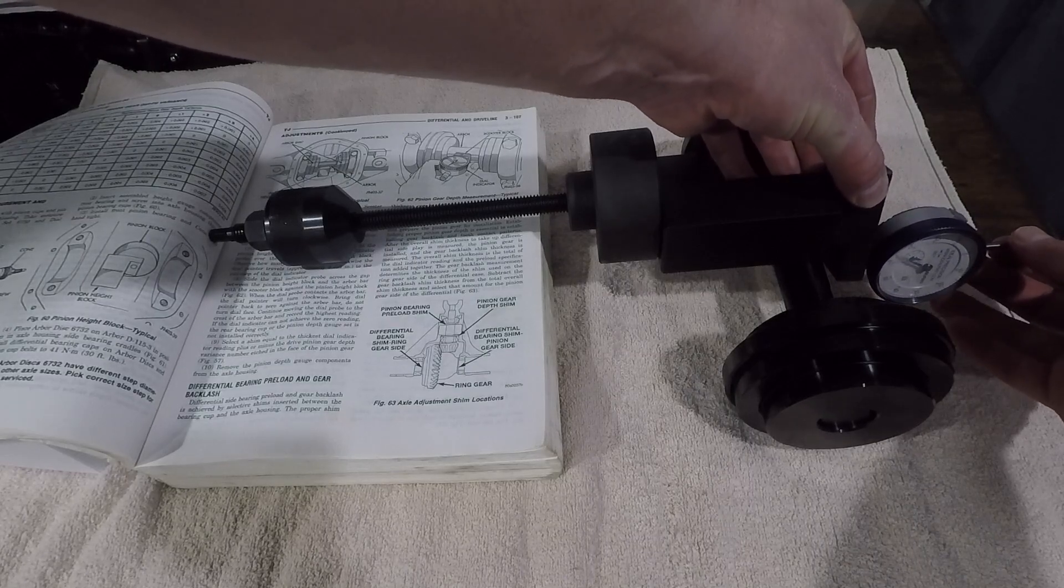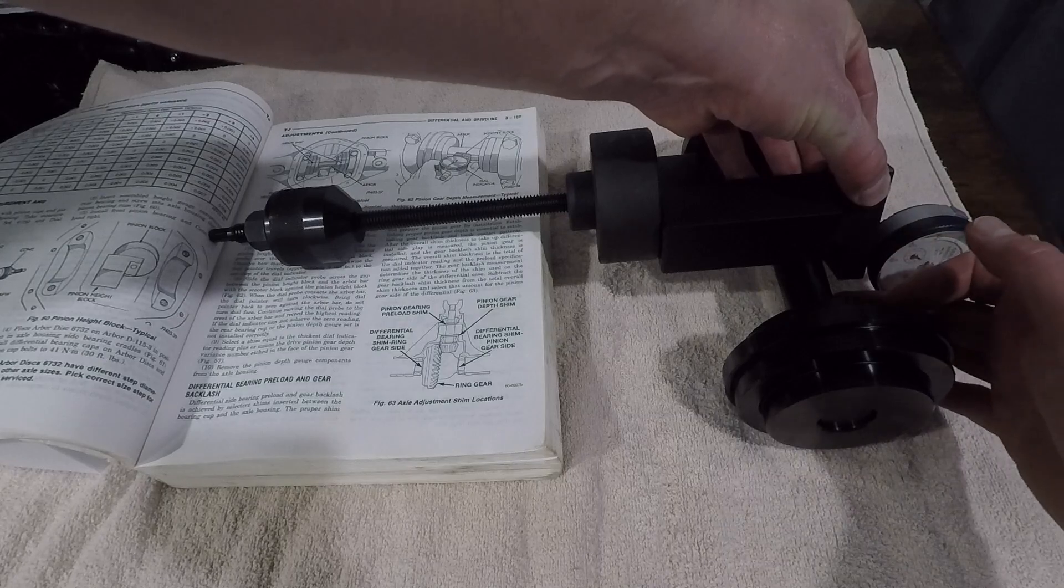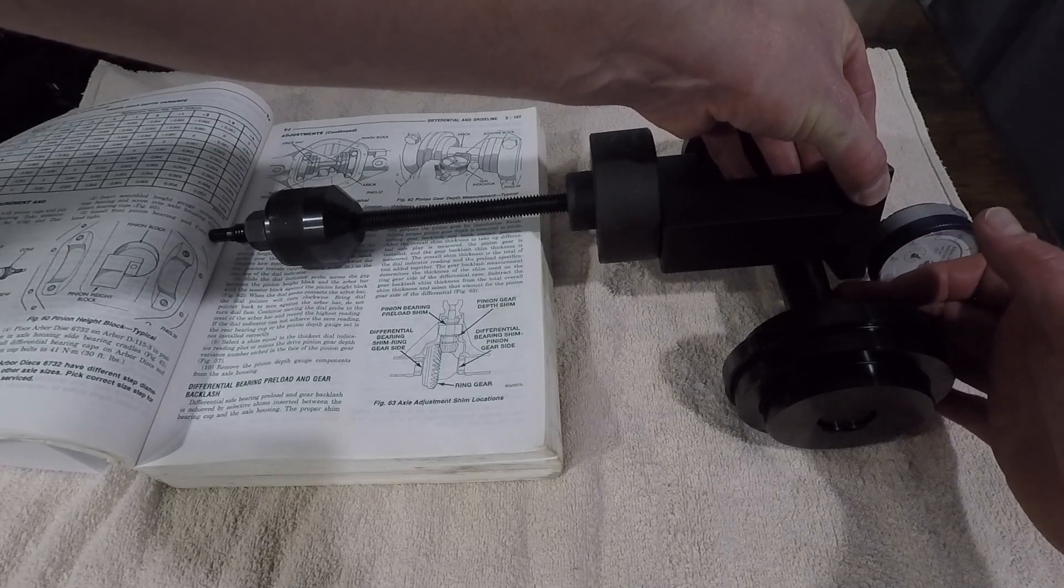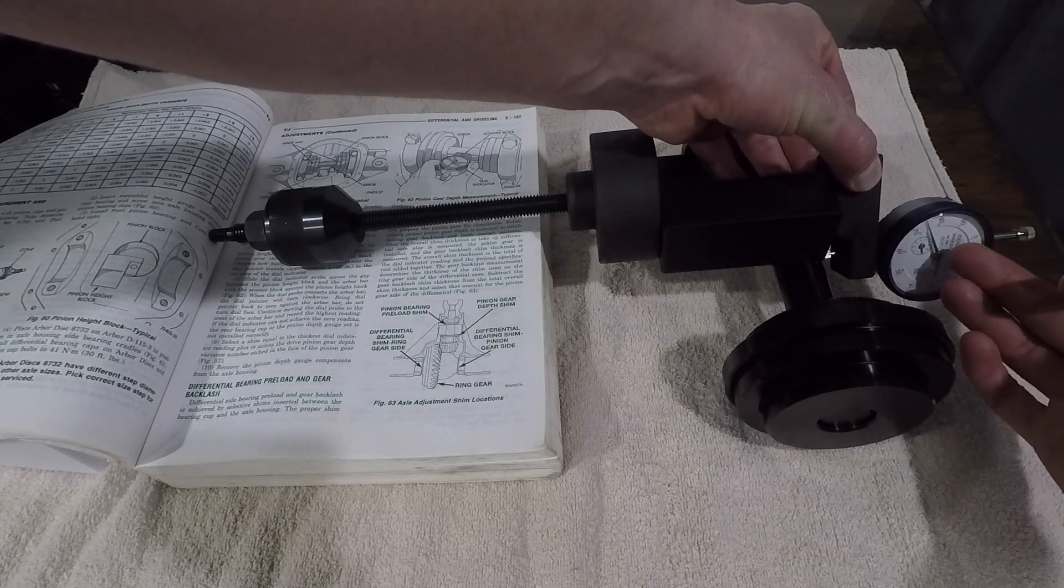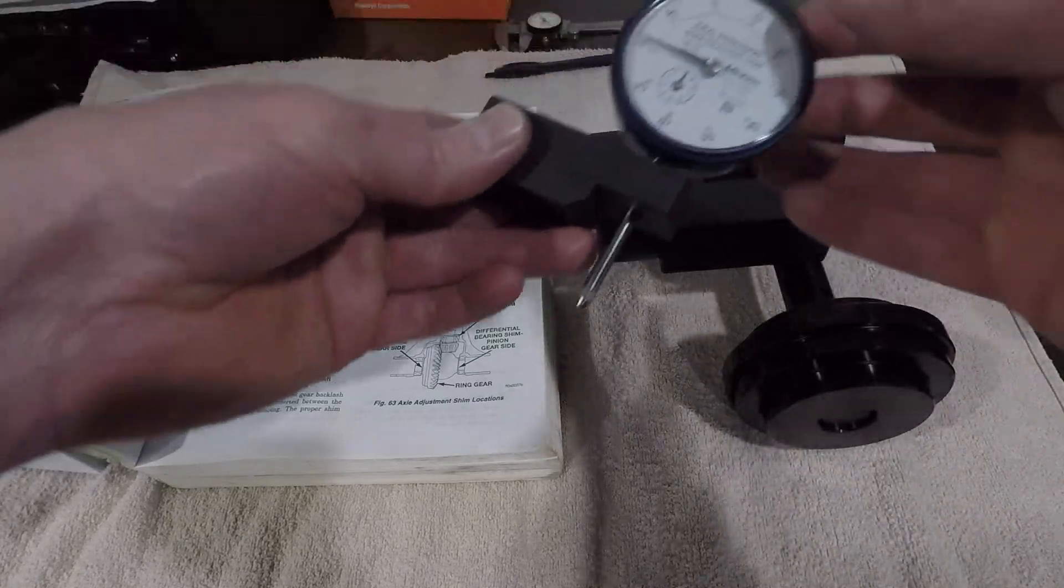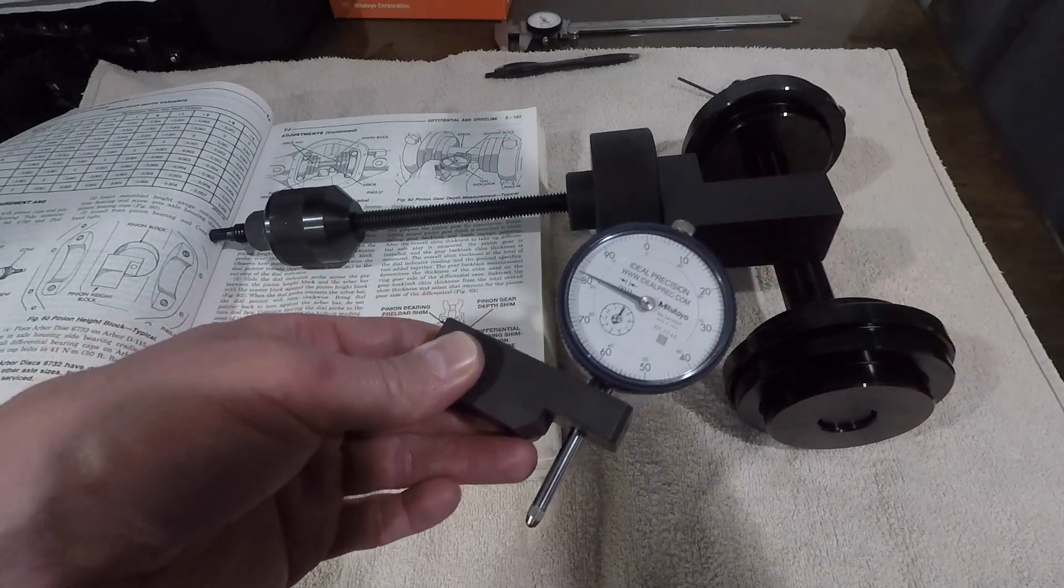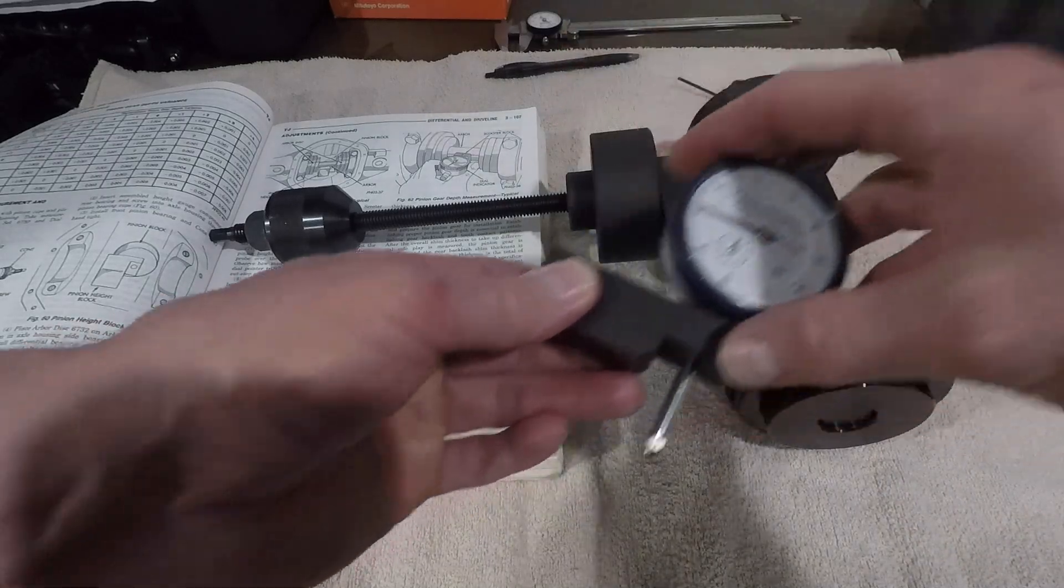Once it's zeroed out, then you're going to place it on here and you're going to slide this thing over to the highest point of this shaft. Once you're at the highest point, you're going to take your measurement and whatever your measurement is on the dial indicator is the amount of shims that you add to the pinion.